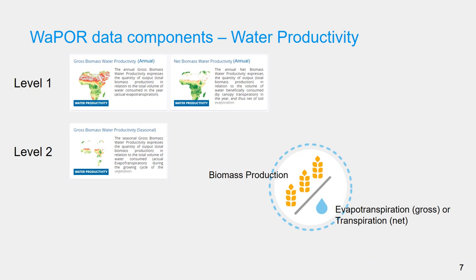The water productivity component is computed from biomass production and water data components. These are available annually at level 1 and seasonally at level 2. For level 3, if land cover classification with crop type information is provided, users can compute crop water productivity from harvest index and water content of the crop type.